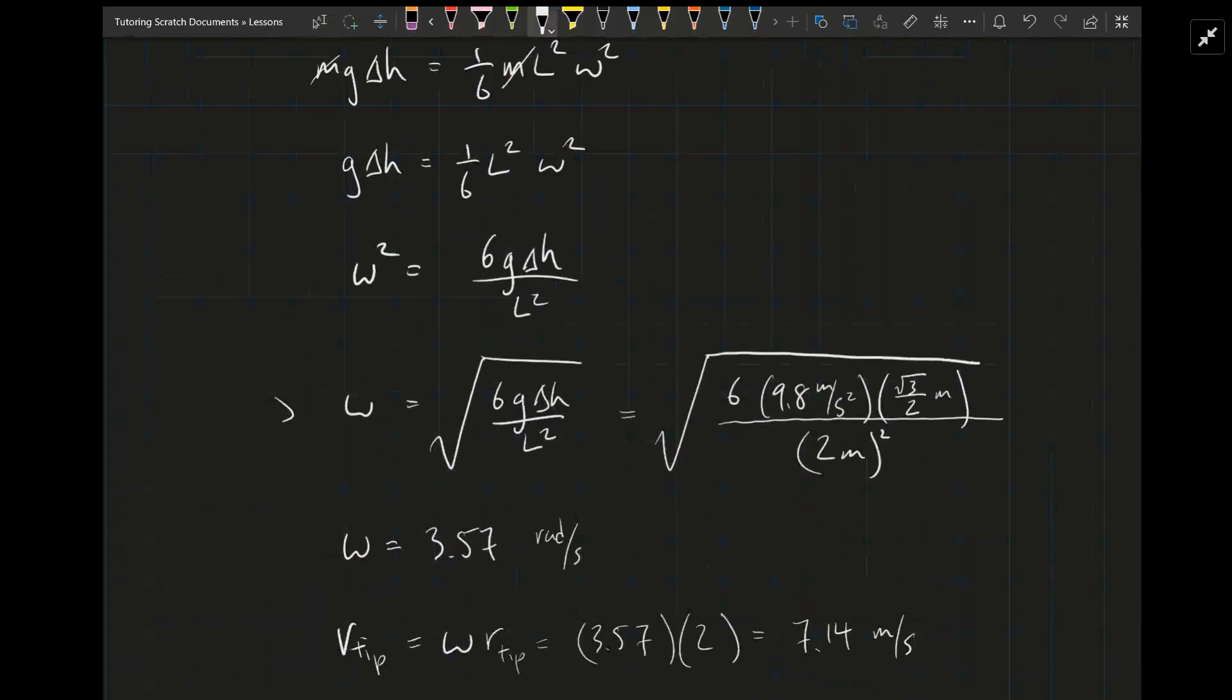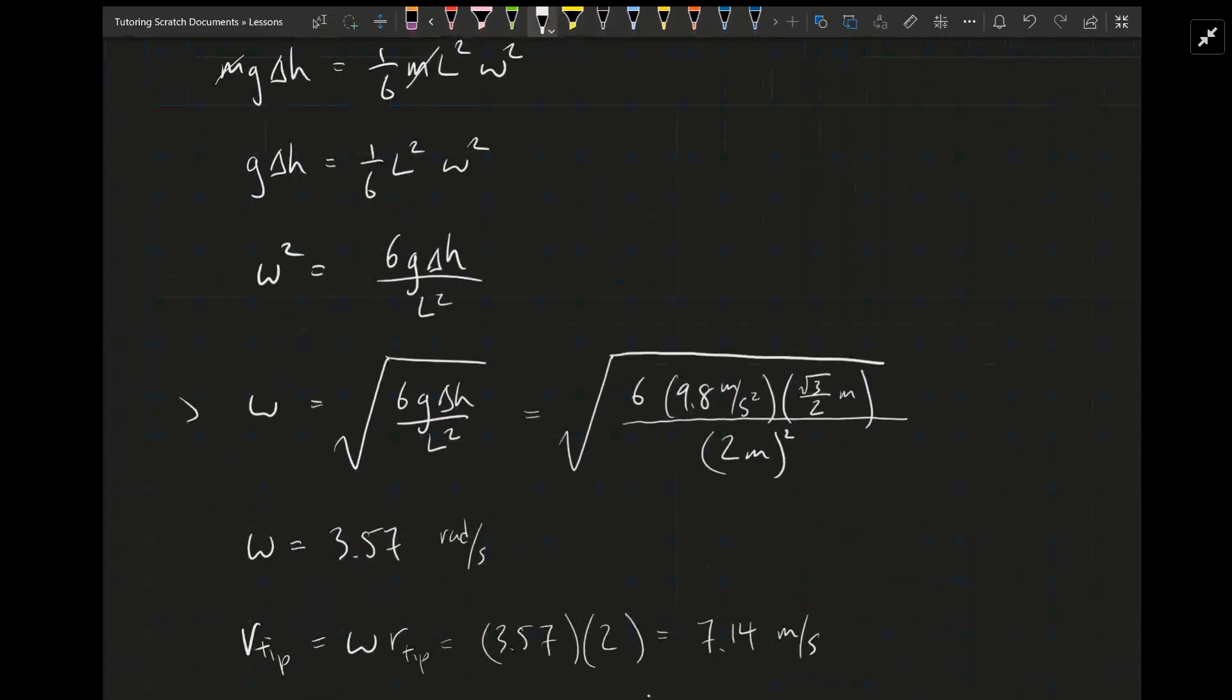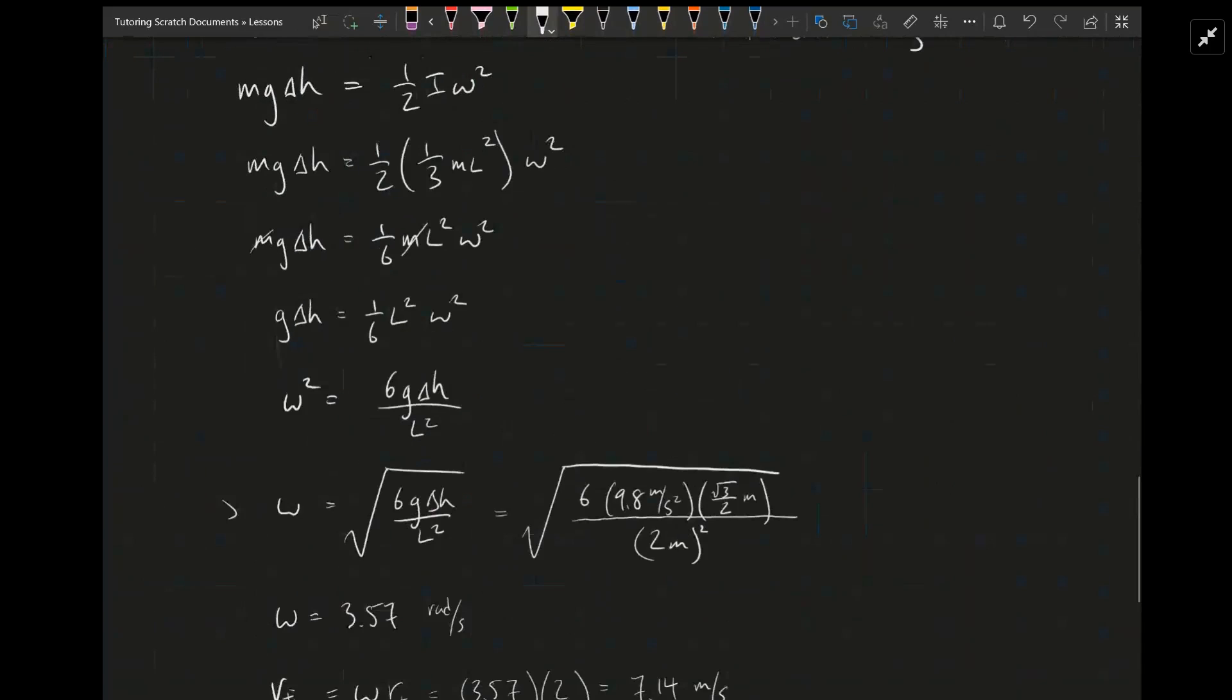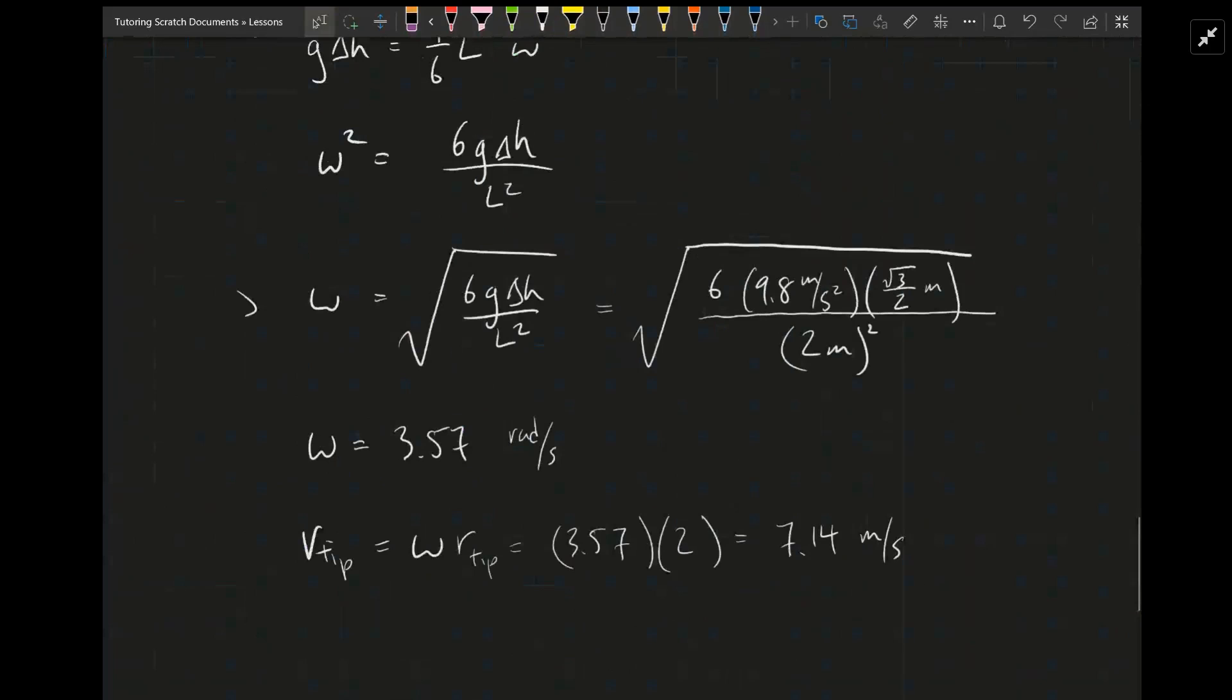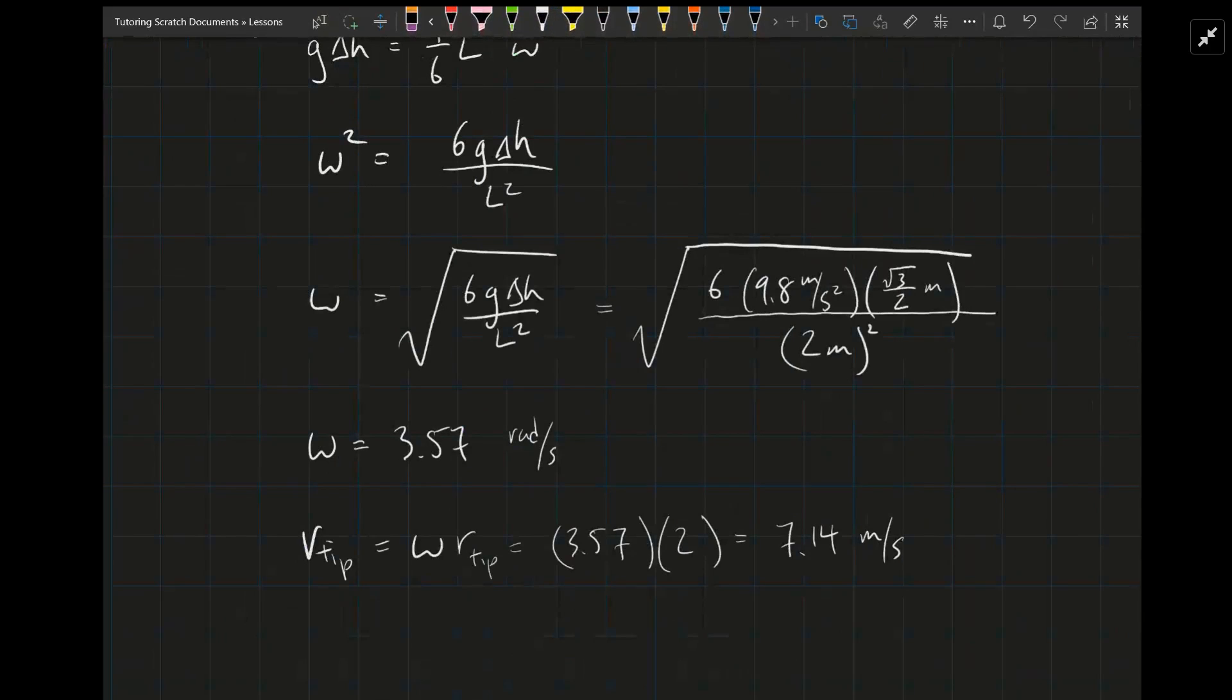Now we can plug in values. g is 9.8 meters per second squared. Delta h, we calculated before, is root 3 over 2 meters. And l is the length of the entire rod, which is 2 meters. So using all of that, we get that omega, the angular velocity of the rod, is 3.57 radians per second.